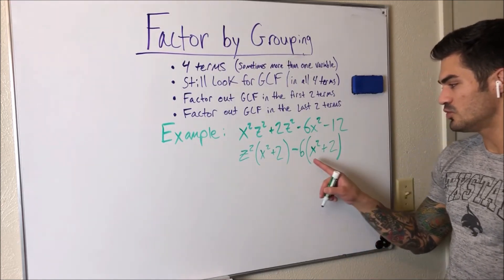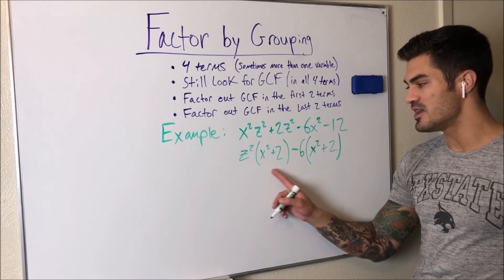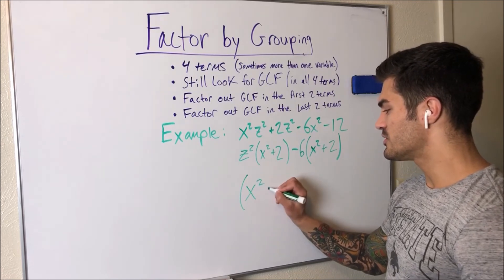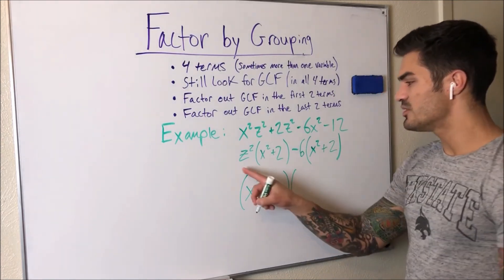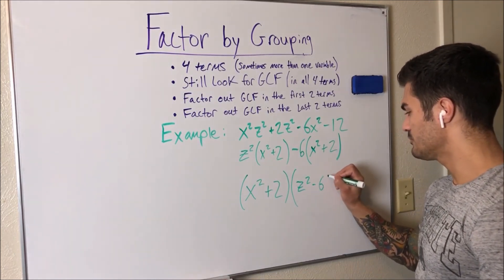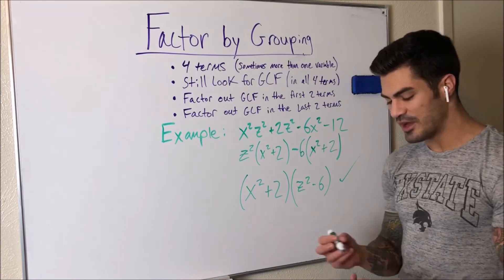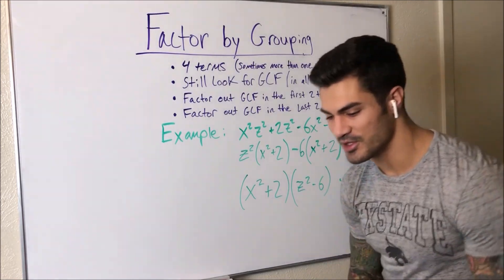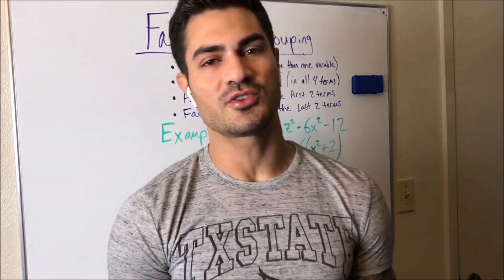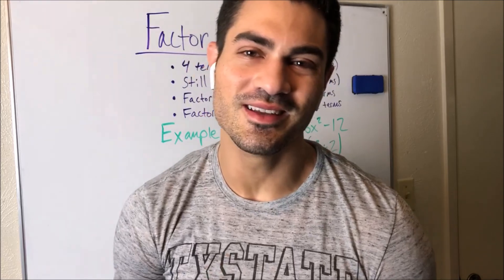So now we have X squared plus two appearing in both groups, which is our common factor. We take X squared plus two out in front, and what we're left with is Z squared minus six. So the final factored form is (X squared plus two)(Z squared minus six). You can FOIL this out and get right back to where we started. Thank you for watching — leave comments and questions below. This method is very useful when you see things with four terms, and you also use it when applying the AC method to factor trinomials. See you next time.